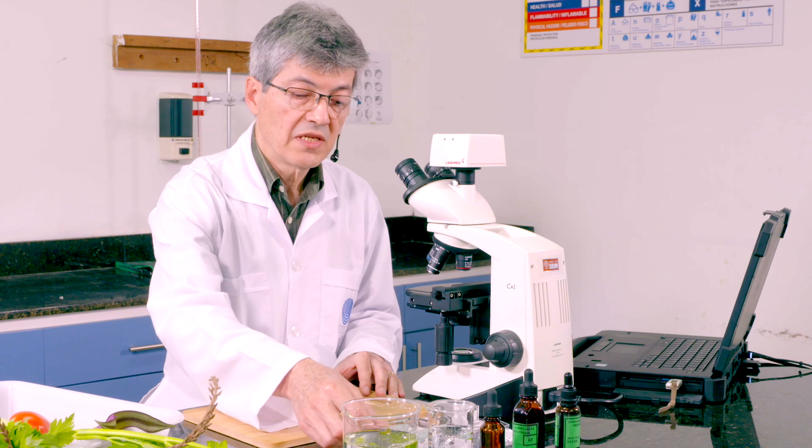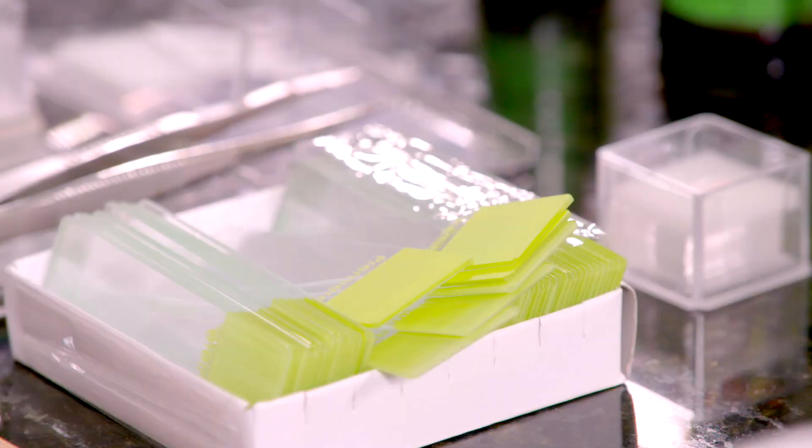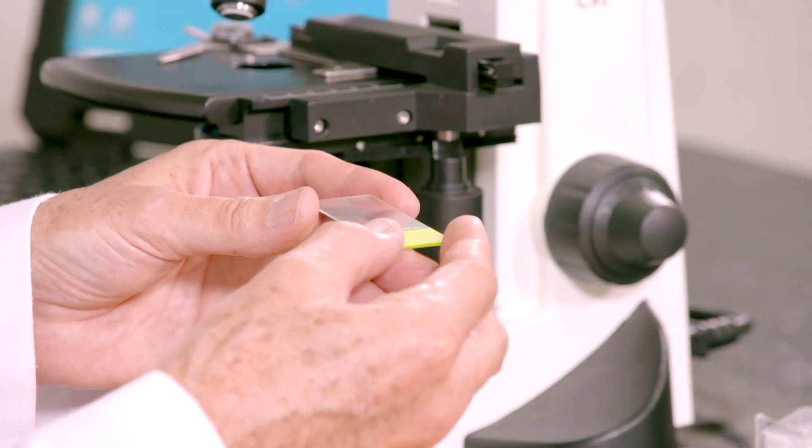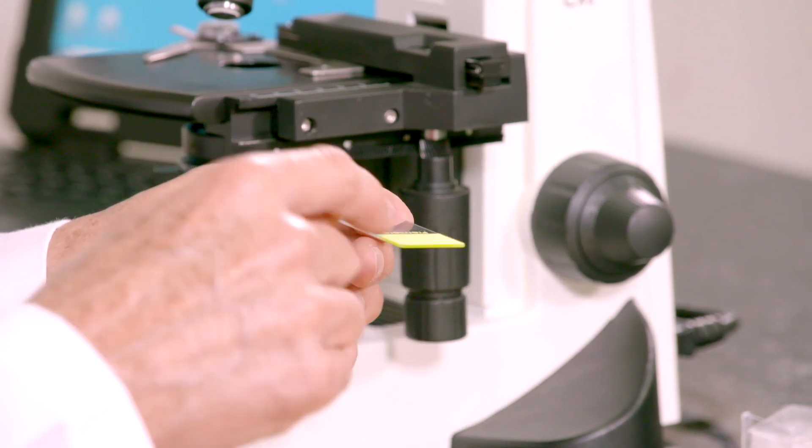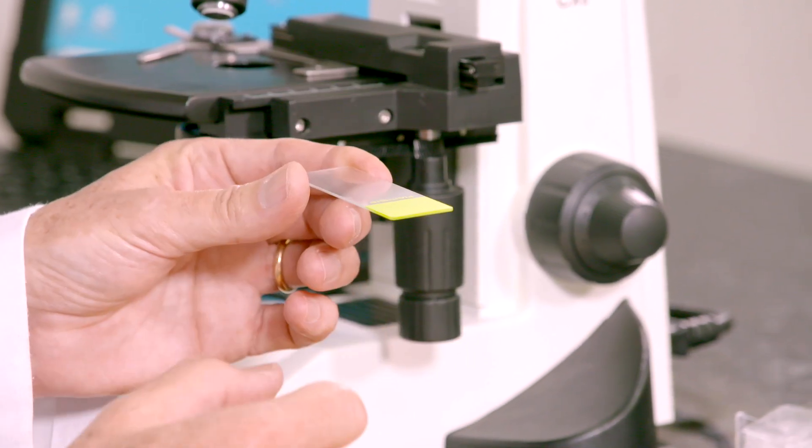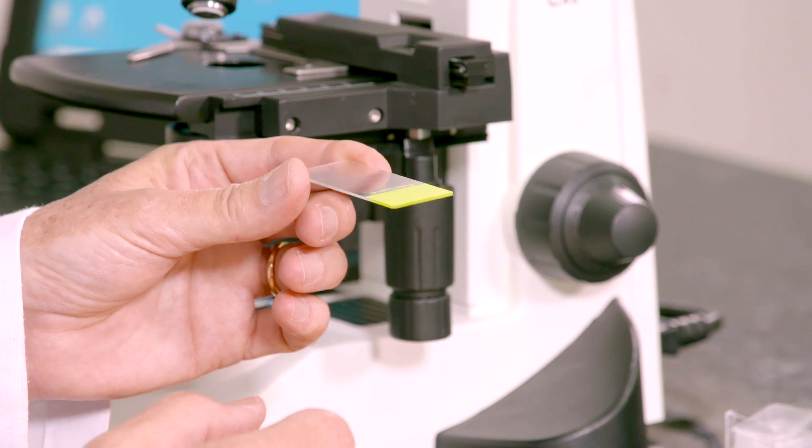Acá tenemos los materiales que vamos a utilizar. Primero que todo, necesitamos estos pequeños cristales, se llaman portaobjetos. Estos portaobjetos se llaman así porque aquí vamos a ubicar la muestra que vamos a estudiar.